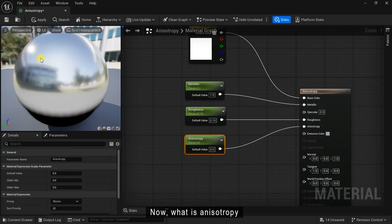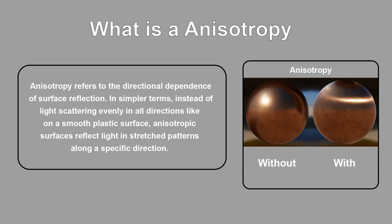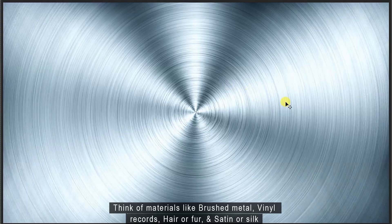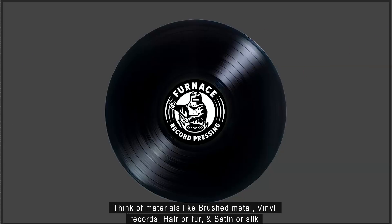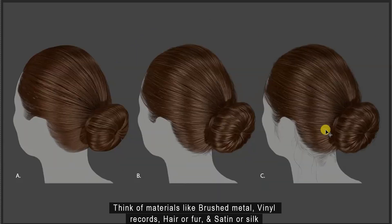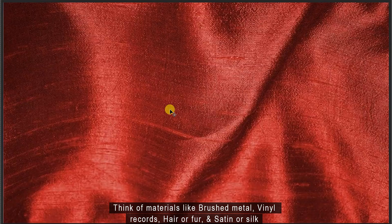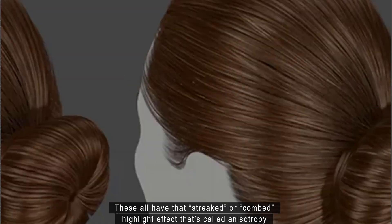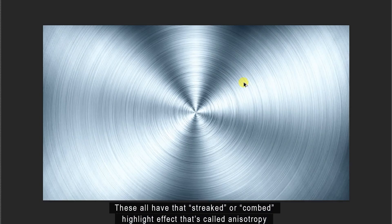Now what is anisotropy? Anisotropy refers to the directional dependence of the surface reflection. In simpler terms, instead of light scattering evenly in all directions like on a smooth plastic surface, anisotropic surfaces reflect light in a strange pattern along a specific direction. Think of a material like brushed metal, vinyl record, hair or fur, and satin and silk. These all have that stretched or combed highlight effect — that's called anisotropy.